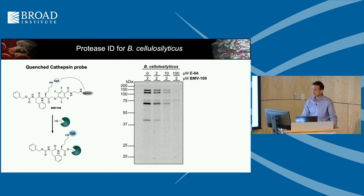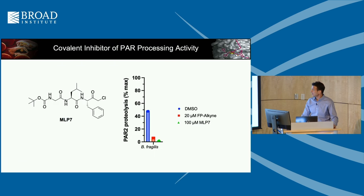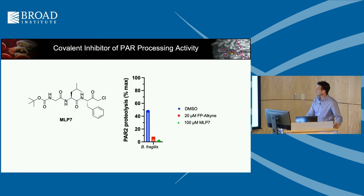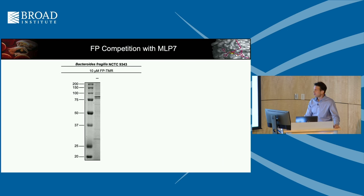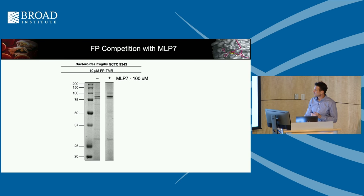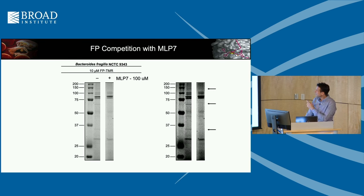For the serine protease targets in B. fragilis, Marcus had synthesized an inhibitor called MLP7 — a chloromethyl ketone. This compound nicely inhibits the activity seen in B. fragilis: with DMSO treatment you get good cleavage of the PAR substrate; with FPL-kind you can block it; and with MLP7 you can completely shut down PAR2 processing activity. We then used this as a competitor for proteomics analysis — labeling extracts with the FP probe and showing that three bands at different molecular weights competed away when adding MLP7.